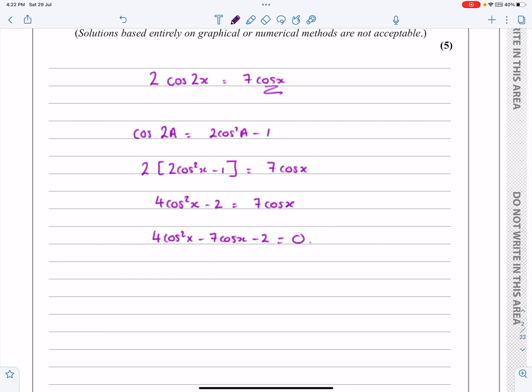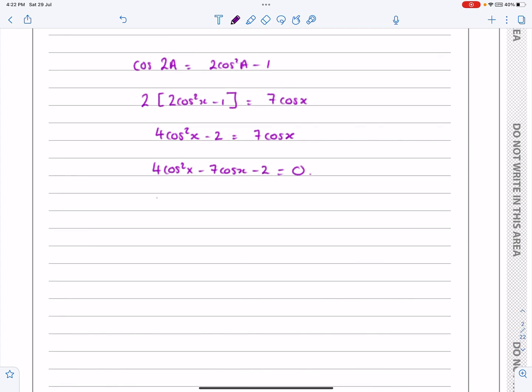Always check and see whether it factorises. This one does. It factorises to 4 cos x plus 1, cos x minus 2. You've got to be good at doing your factorising. Make sure you practice a lot of those.